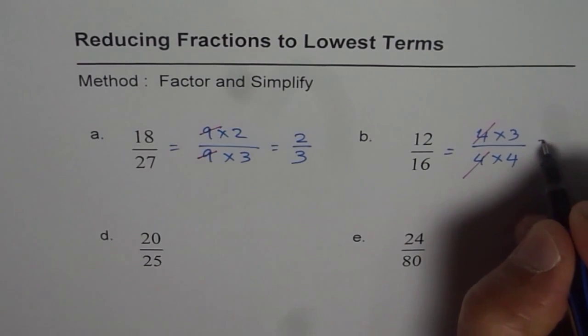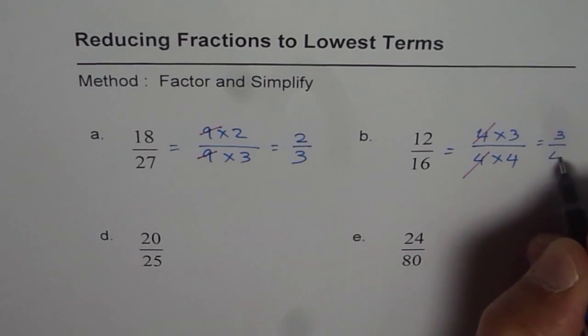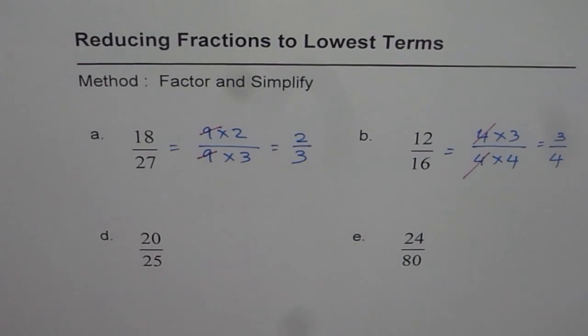4s are canceled out. You are left with 3 out of 4. So that's the result, 3 out of 4. Let's represent it in the form of a fraction.